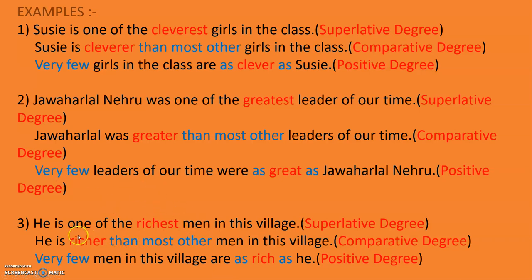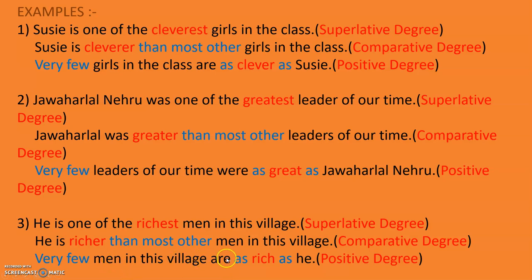If I say: he is one of the richest men in this village. First, find out which degree — 'richest' is EST, so it is superlative degree. He is one of them, meaning there are others also. Comparative: he is richer — ER — than most other men in this village. Positive: very few men in this village are as rich as he. 'Rich' means positive degree, and 'as' is on both sides.